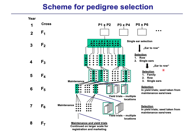We use ear-to-row once again: one ear here is one row in the F4 generation. In the F4 generation we have a more structured selection. We have a group of three rows — we would call it a family — and this family traces back to one row in the F3 and ultimately to one single F2 ear.